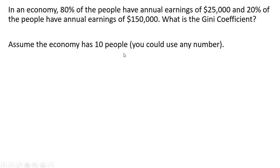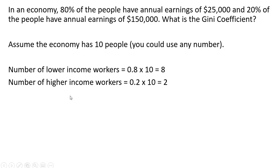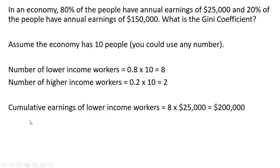We assume the economy has 10 people—we could pick any number here, but 10 is as good as any. The number of lower income workers then is going to be 0.8 times 10, or 8, and the number of higher income workers, those earning $150,000 annually, is going to be 0.2 times 10, or 2.